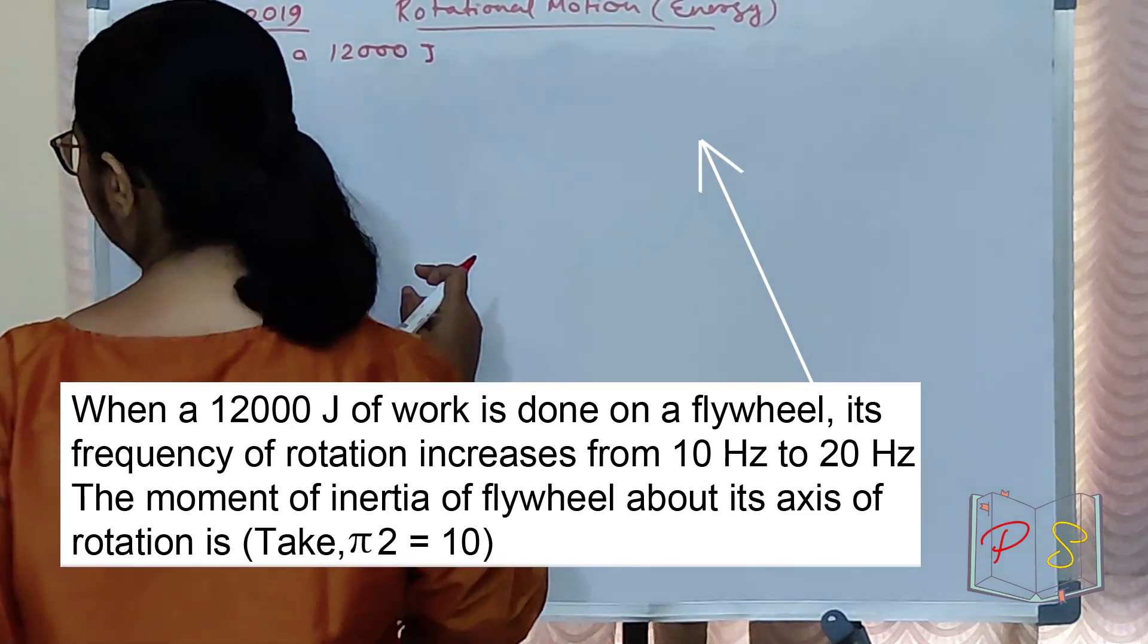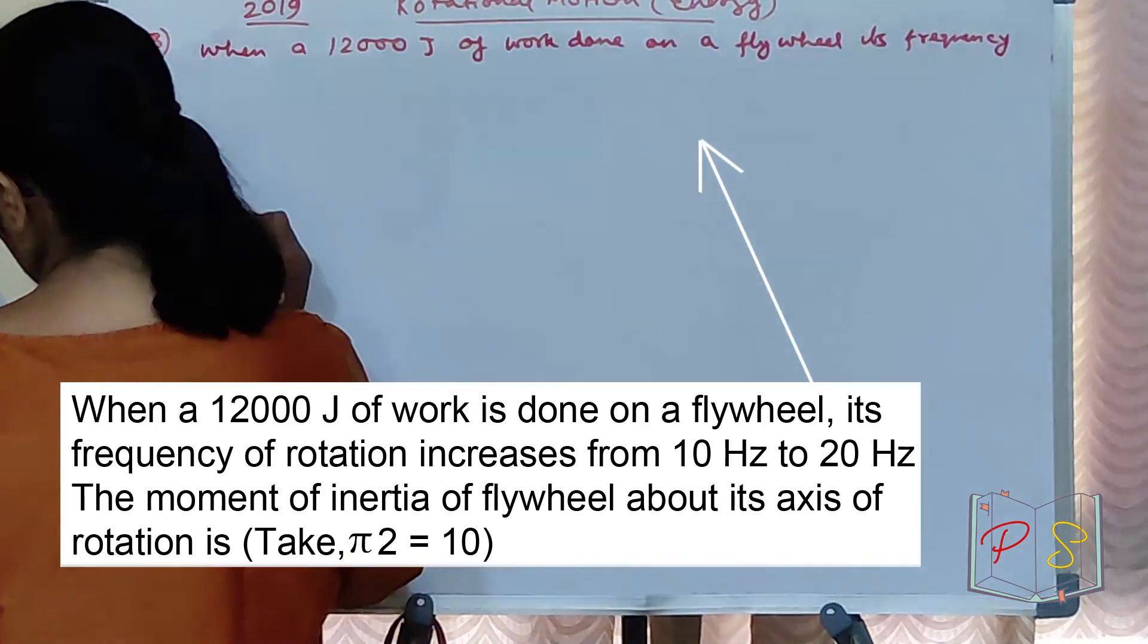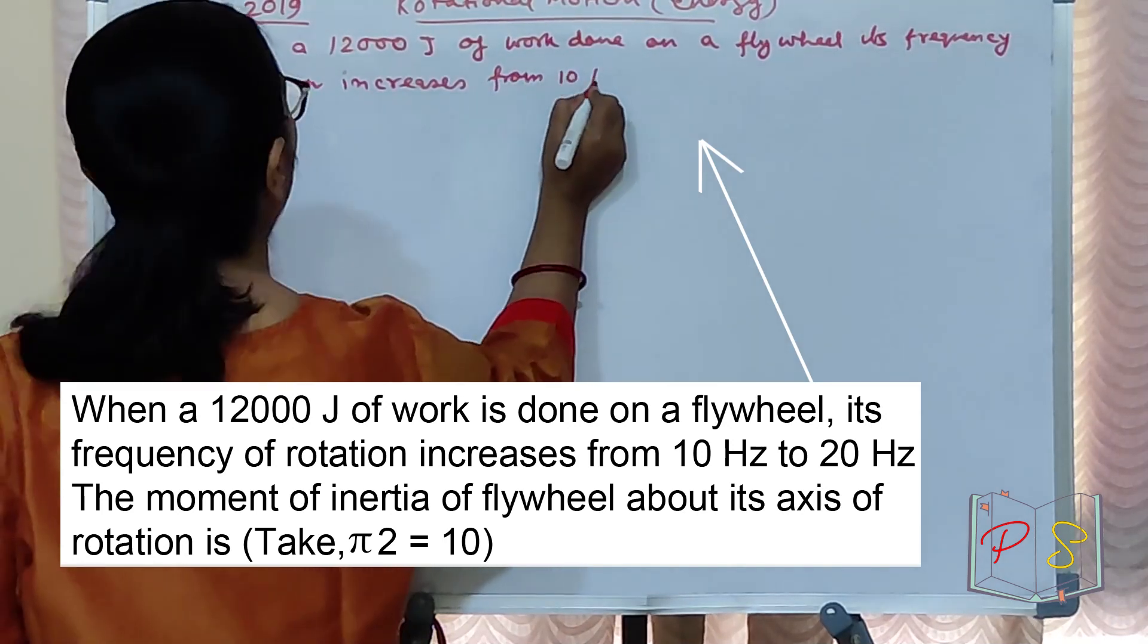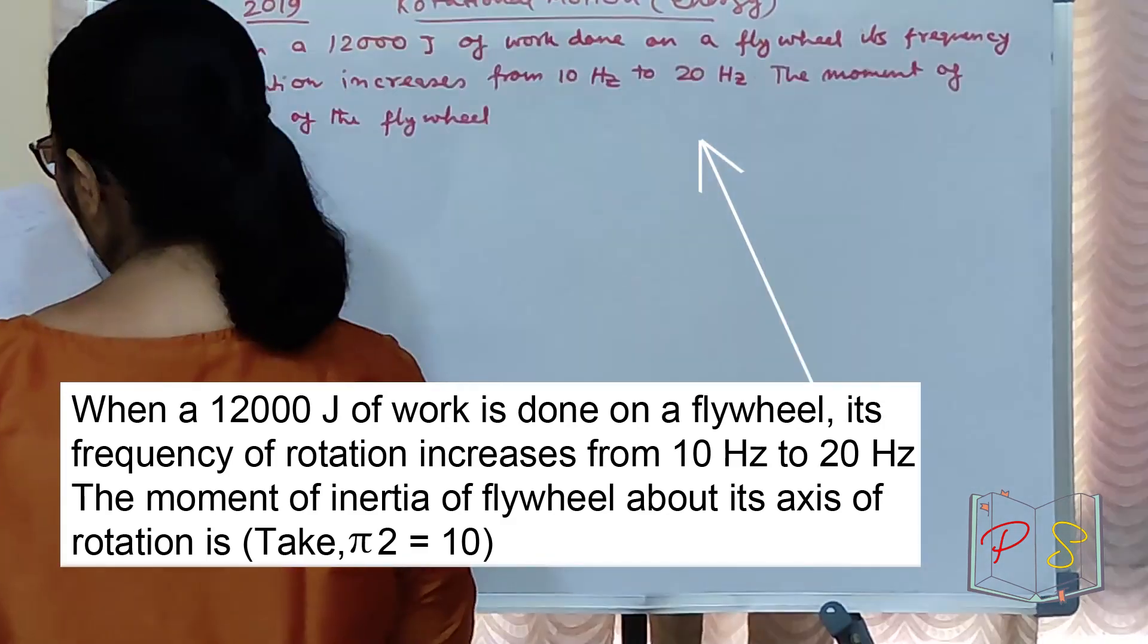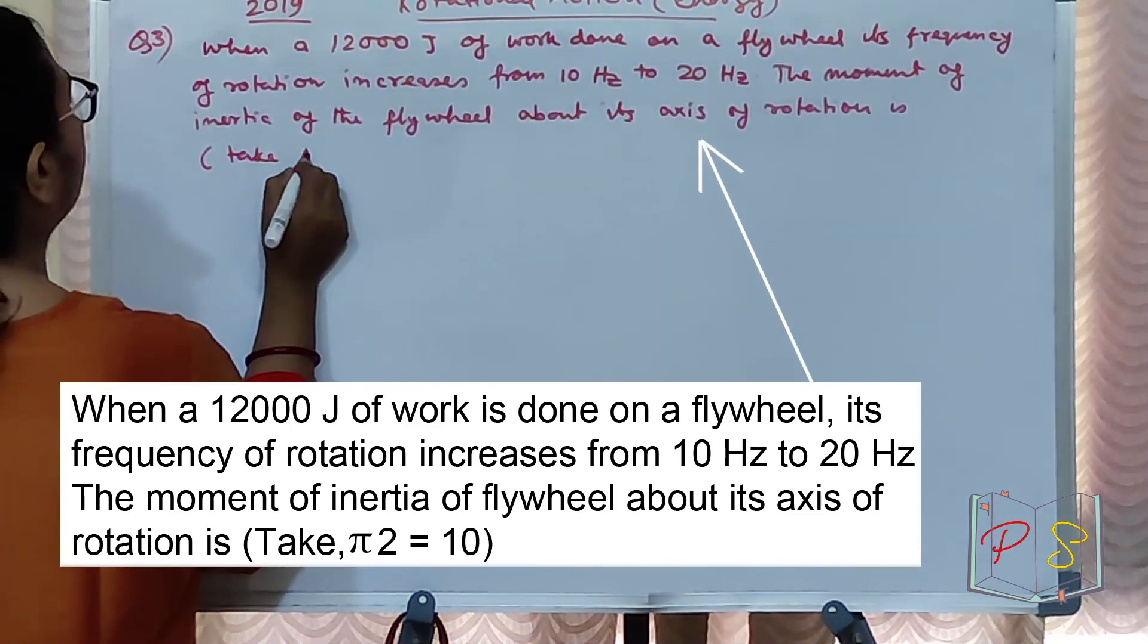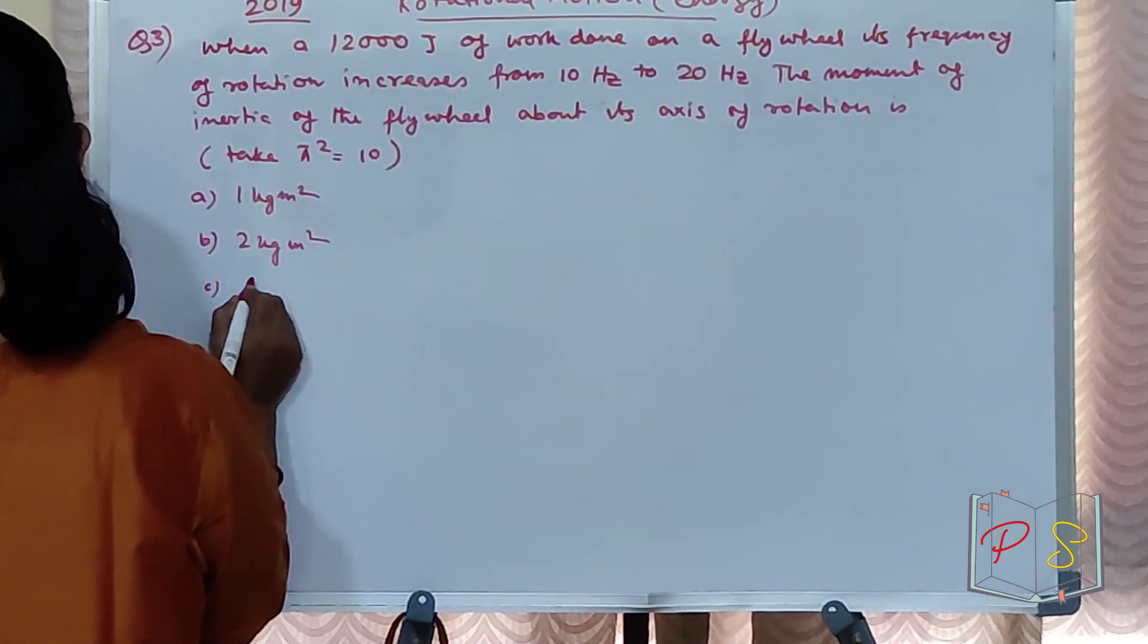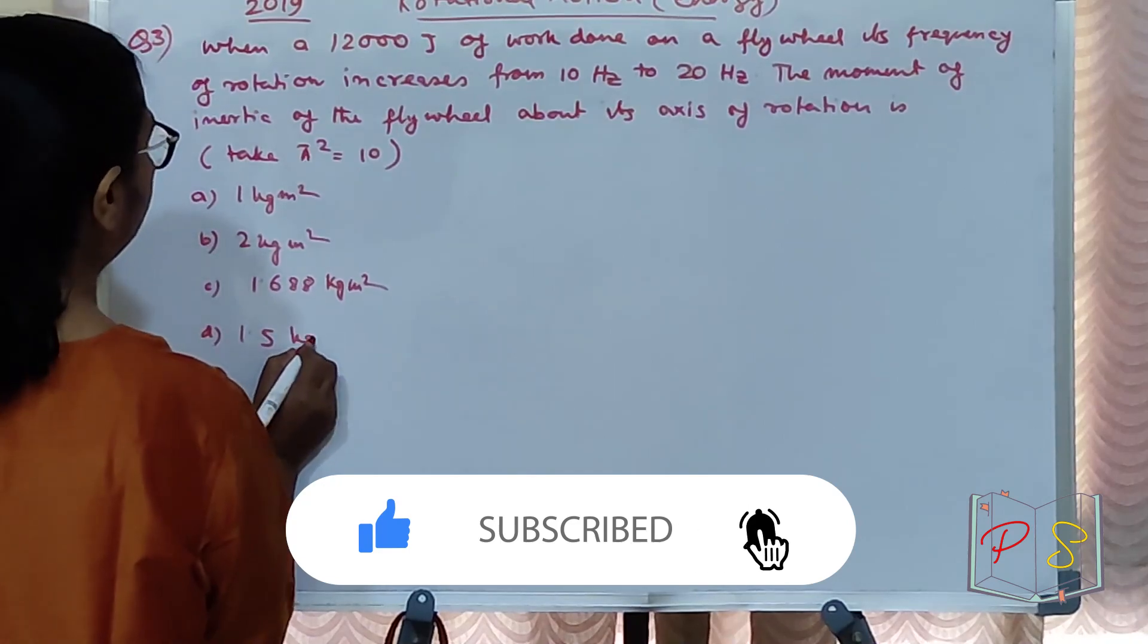Question number 3 came in 2019. When work done on a flywheel, its frequency of rotation increases from 10 hertz to 20 hertz. The moment of inertia of the flywheel about its axis of rotation is, bracket me de diya, take pi square equal to 10. Option A is 1 kg meter square, B option is 2 kg meter square, C option is 1.688 kg meter square and D is 1.5 kg meter square.